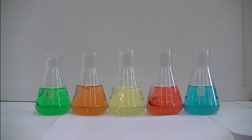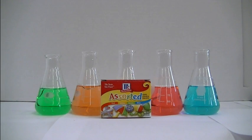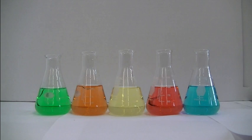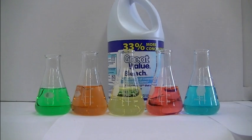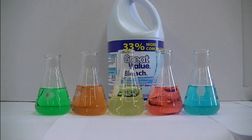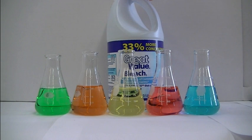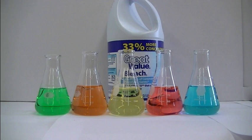The food dyes that I use for this experiment are McCormick food dye. Again, as I stated before, the bleach that I use, it happens to be a little bit more concentrated than most bleach that's sold. This is 33% more concentrated. It's 8.25% sodium hypochlorite. So if you're using a bleach that's maybe five or six percent sodium hypochlorite, instead of adding two drops to each beaker, you'll probably want to add three.